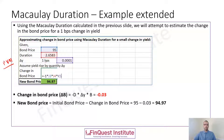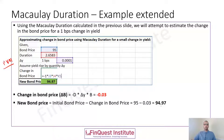Delta y of one basis point translates to 0.0001. The change in bond price is the product of the bond price, the bond duration, and the change in yield — with a negative sign, because duration and price move in opposite directions. This gives a change of minus 0.03, and the new bond price is 95 minus 0.03, equaling 94.97.